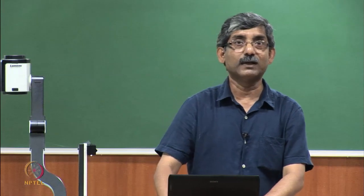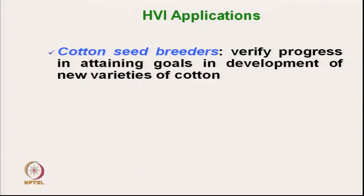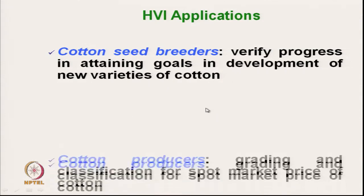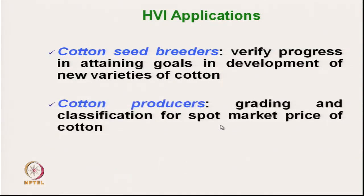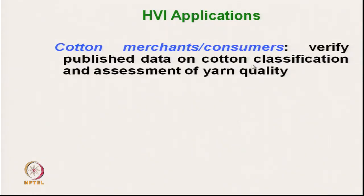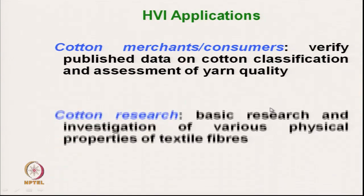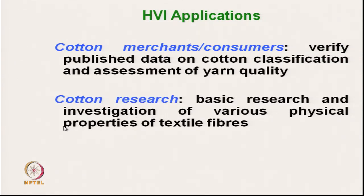The applications of HVI data are used by various groups. A cotton seed breeder uses it to verify progress in developing new varieties of cotton. Cotton producers use it to know the grading and market price of cotton. Cotton merchants and consumers use it to know the classification and quality of cotton, to assess yarn quality, and for basic research and investigation of various physical properties of textile fibre.